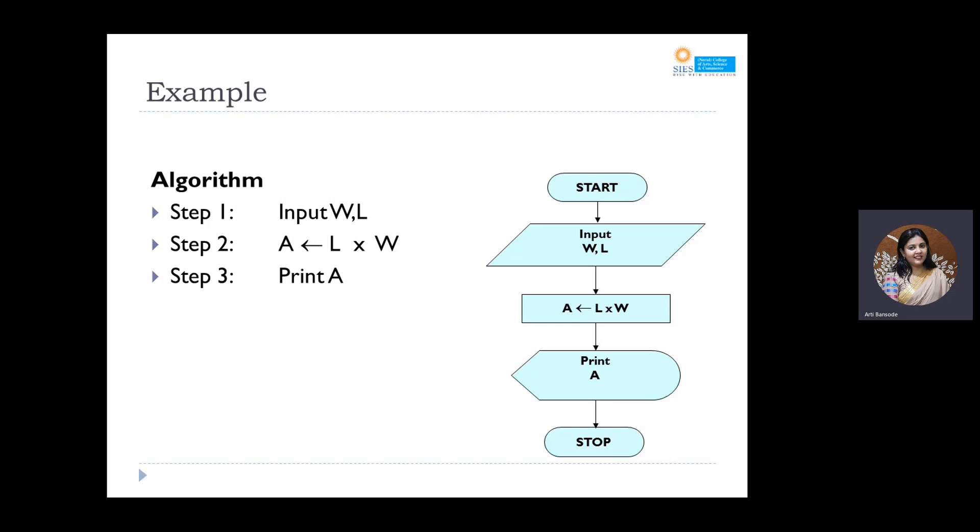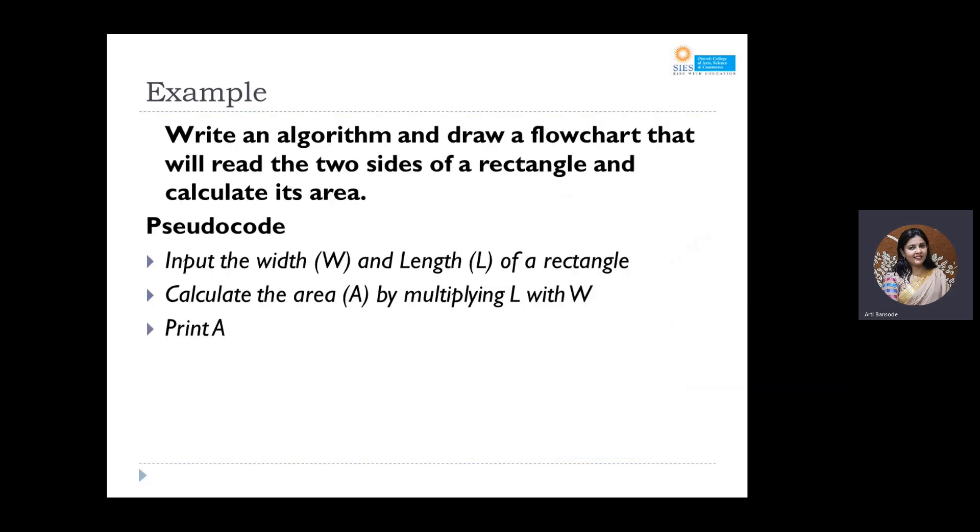Input W, input L. Step number one. Step number two: A is calculated—in a flowchart whenever you're writing an algorithm, do not write equal to sign, then you will write this arrow—so A is calculated as L into W. And step number three is print A. That is how you write an algorithm. Please note the difference between the pseudocode and the algorithm.